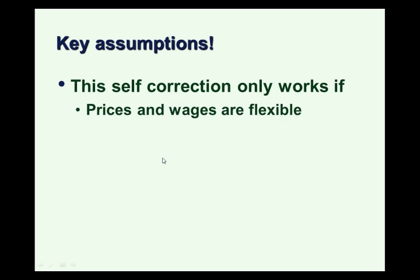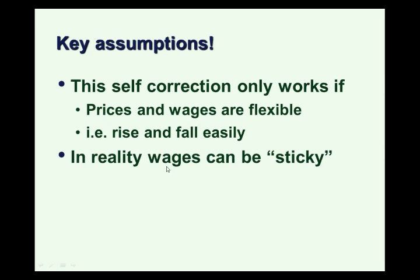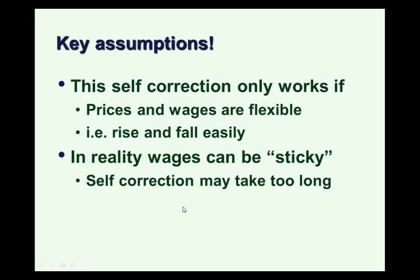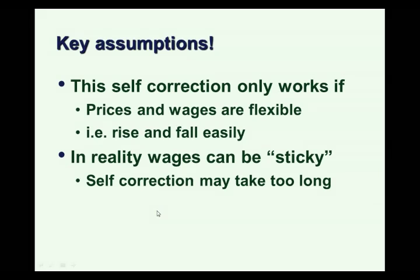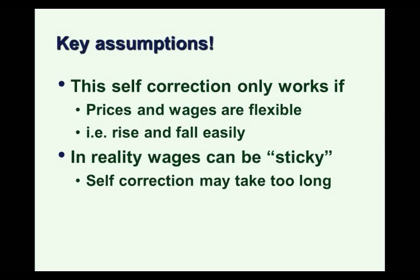Furthermore, self-correction only works if prices and wages are flexible. The flexible price and wage assumption is essential, because that's what it takes for the short run aggregate supply curve to shift and adjust back to potential output — wages and prices need to rise and fall easily. If they don't do that easily or quickly, self-correction could fail to happen, get stuck, or take a very long time. In reality, wages in particular can be sticky — they may not fall as quickly during a recession. That's because of formal and informal contracts and the law. So self-correction in real life might take too long, which is why you have to think about monetary or fiscal policy to close these gaps more quickly — the subject of our next video.